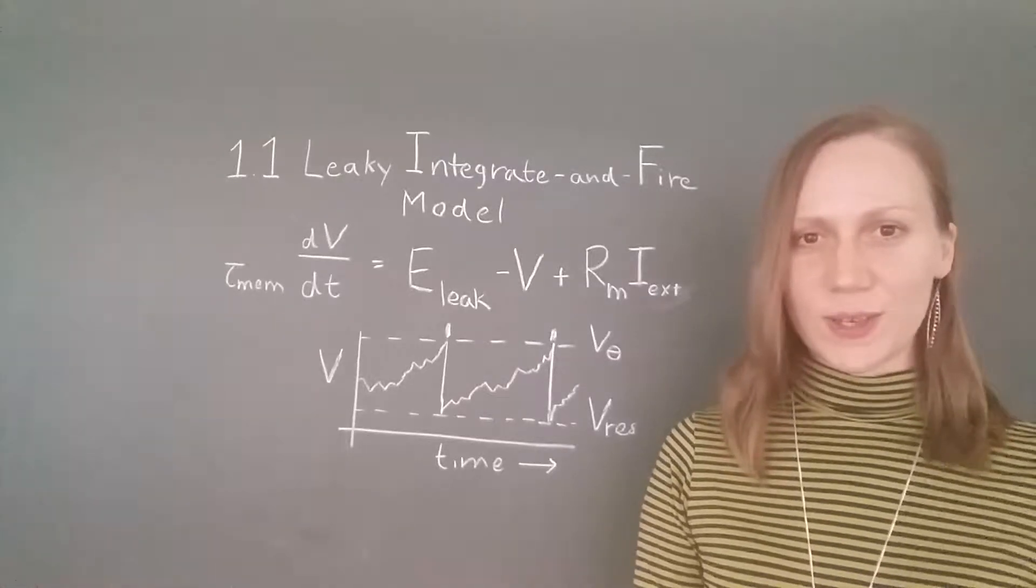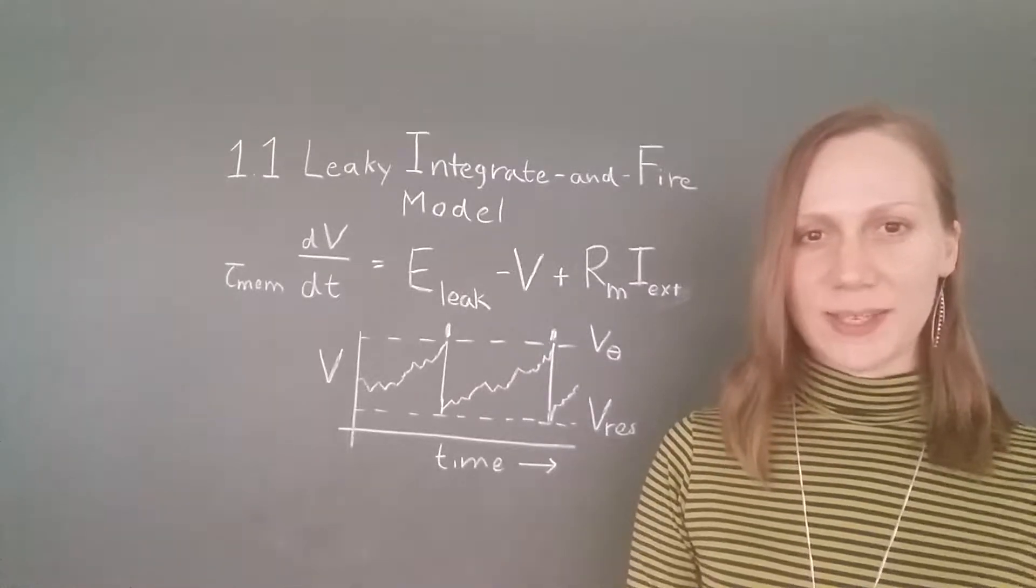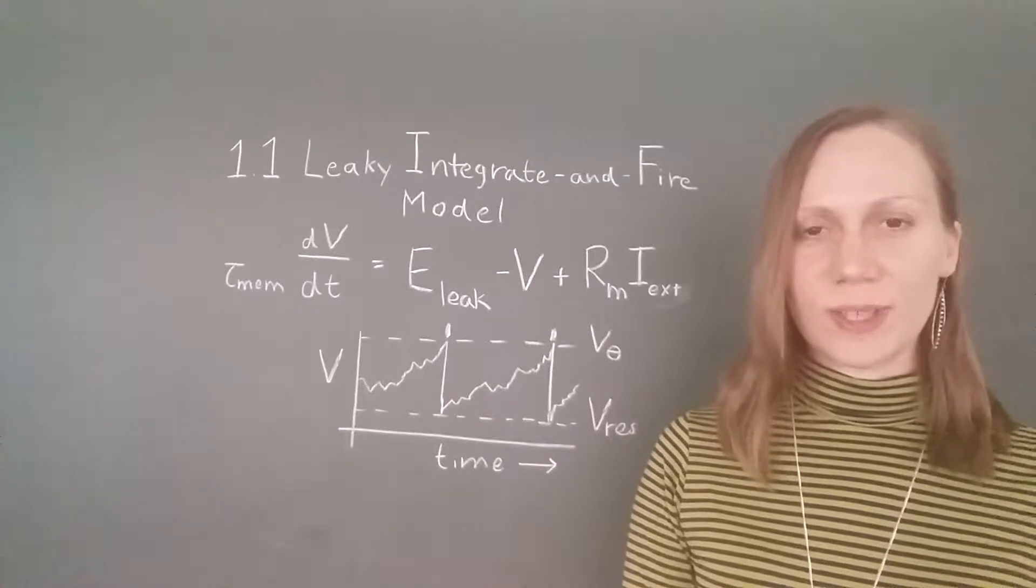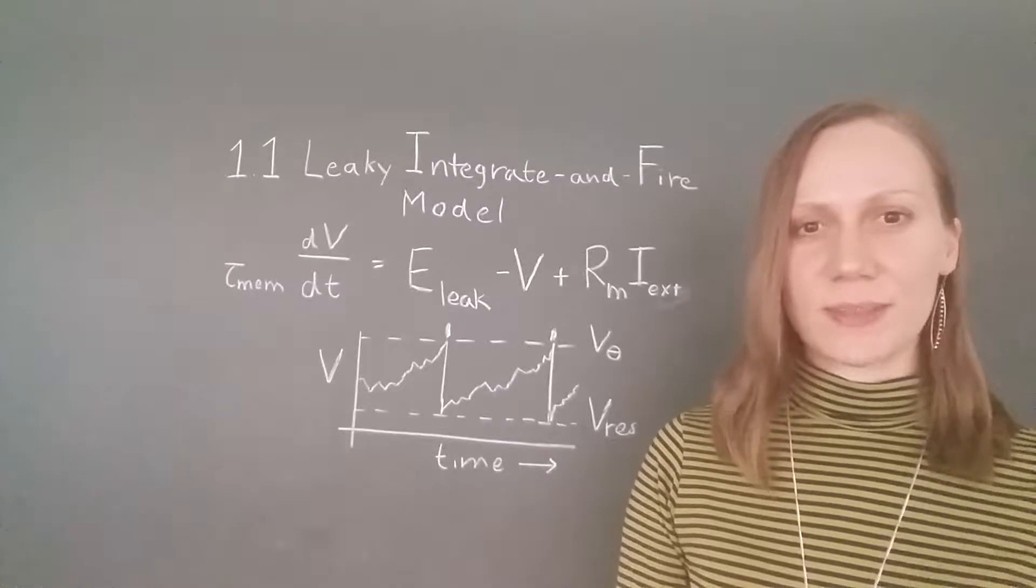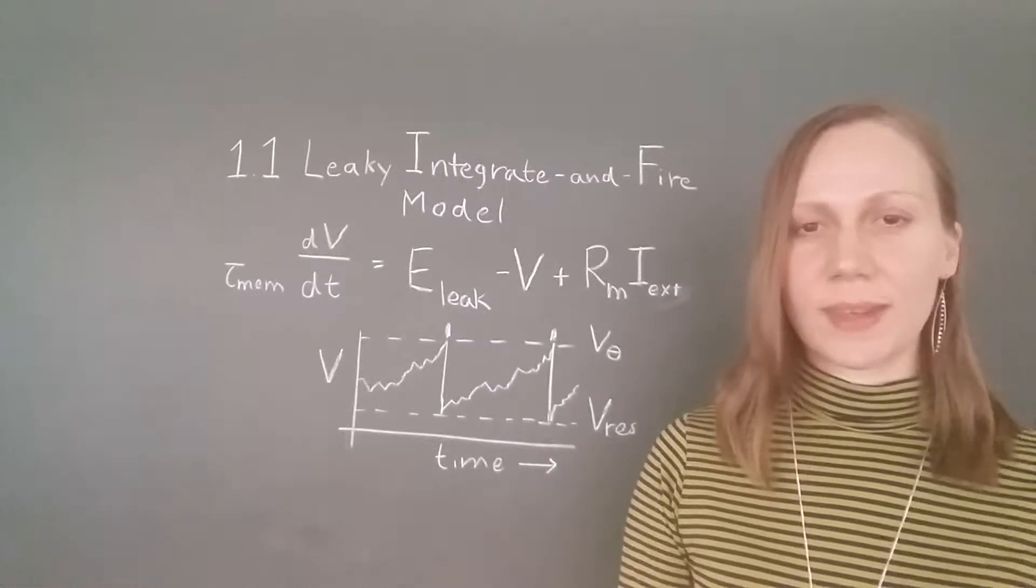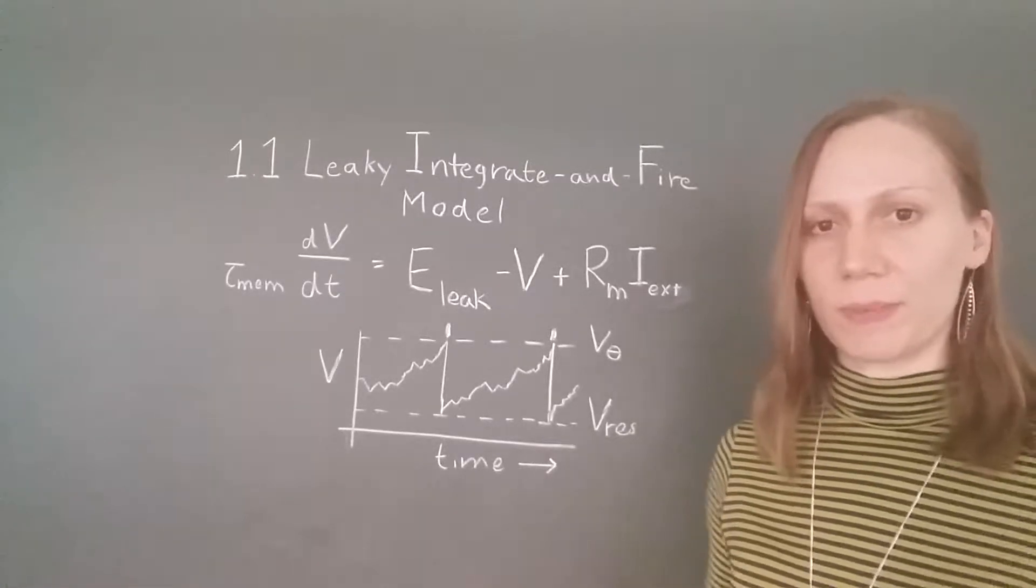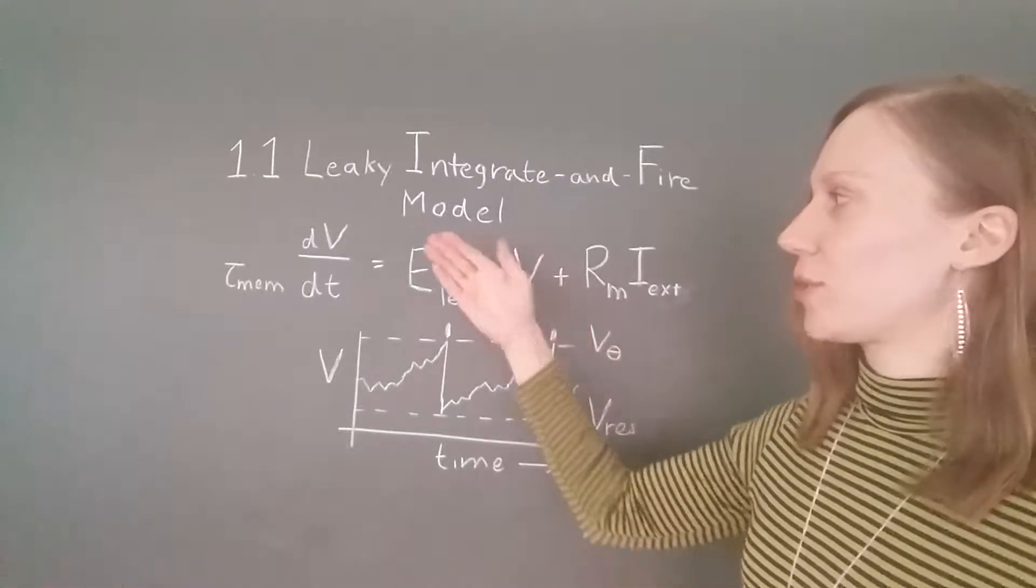Hello, in this first unit we will introduce a basic model of a neuron called the Leaky Integrate and Fire Neuron. This model is highly simplified because it contains only a single variable for the membrane potential of the entire neuron.